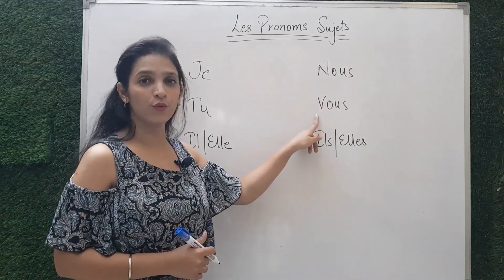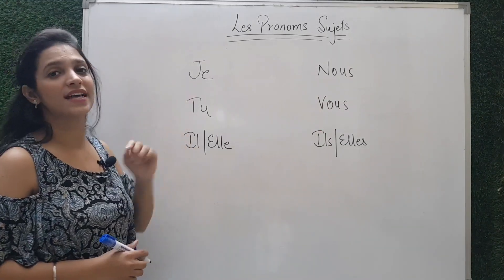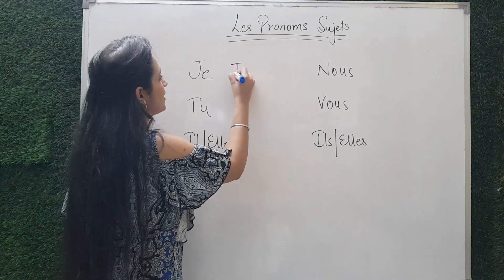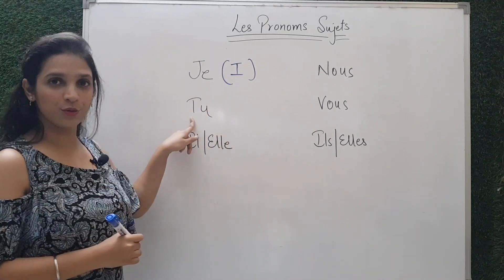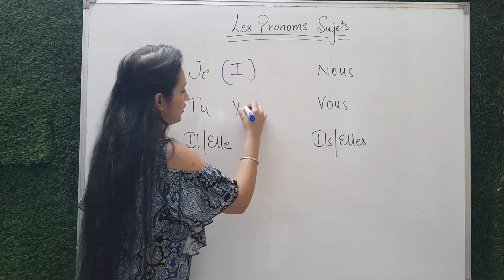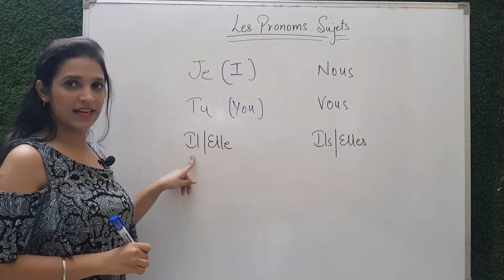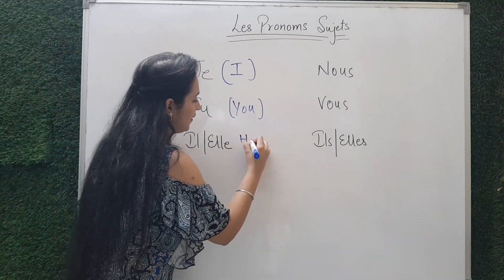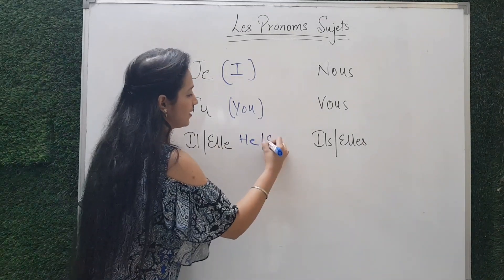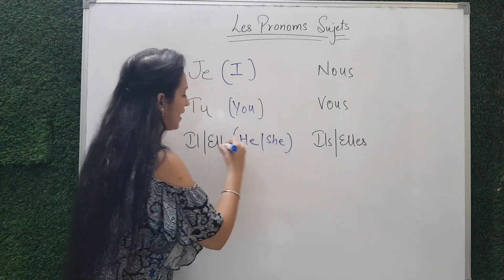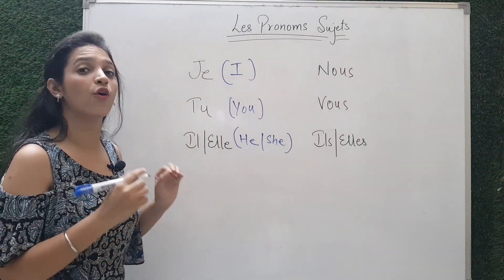Je means 'I'. Tu means 'you'. Il means 'he' and elle means 'she'. Il and elle are also used for 'it'.